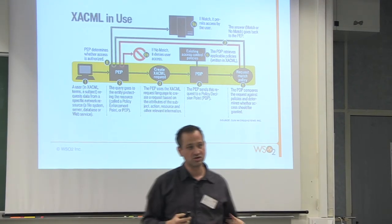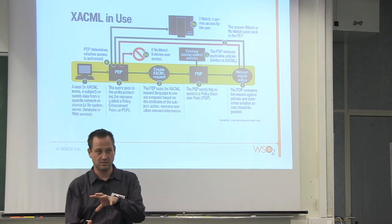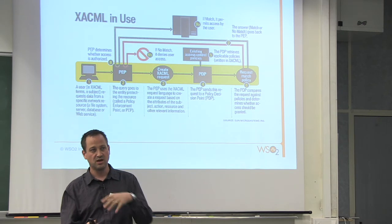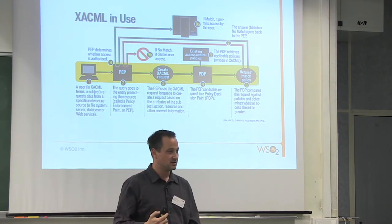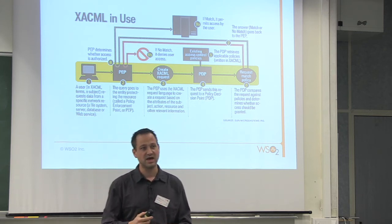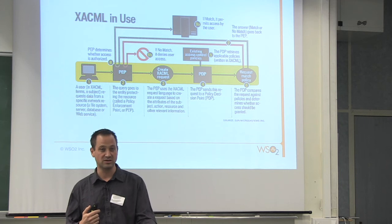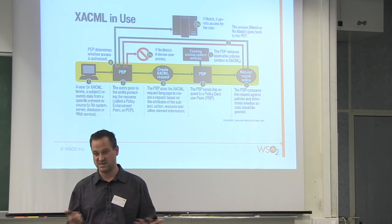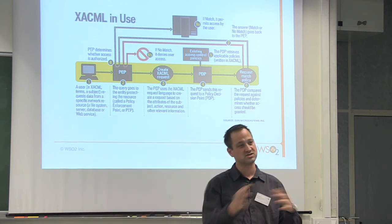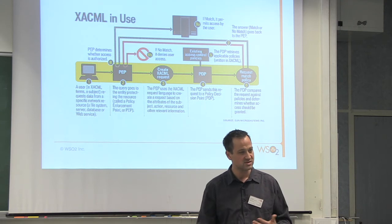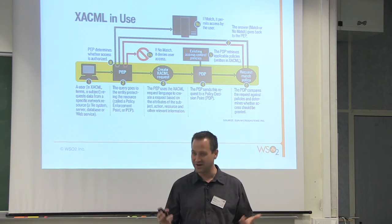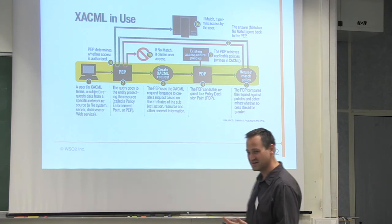You can also turn XACML on its head. Instead of asking 'can Paul access Chris's salary?', you do the opposite: 'who is it who can make this trade on this date?' We're working with a bank that wants to reverse-query XACML policies to find everybody who can ruin the bank by doing too large a trade — then they can review that list and see if it's correct.